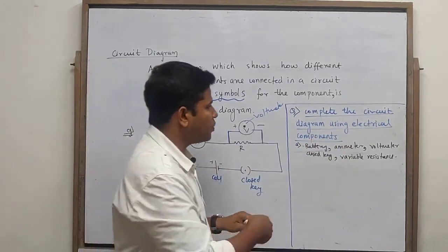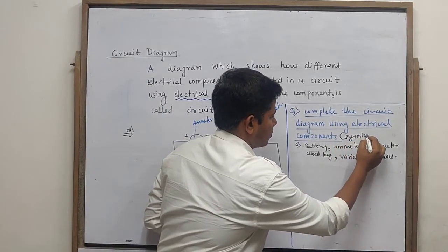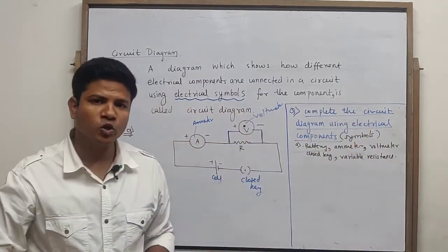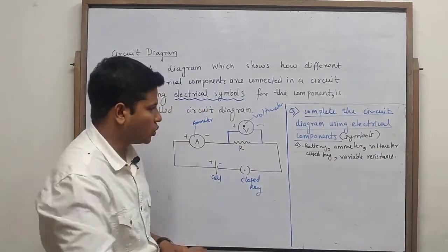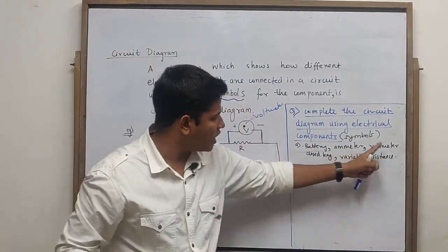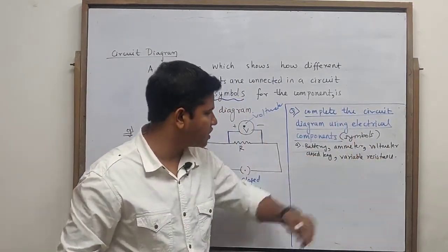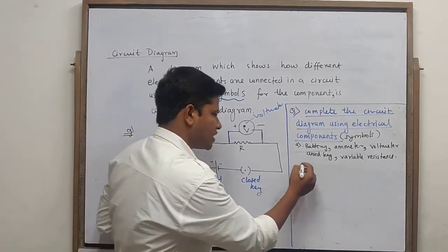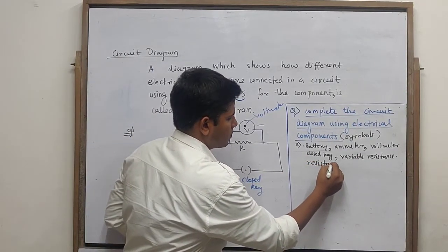So this is a battery, ammeter, voltmeter, variable resistance, and we have a resistance.